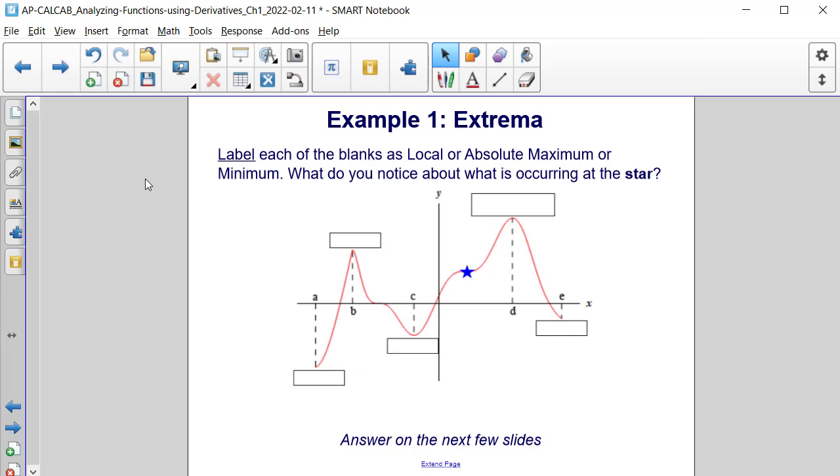Now let's try an example. Label each of the blanks as local or absolute, maximum, or minimum. And then what do you notice about what is occurring at the star?